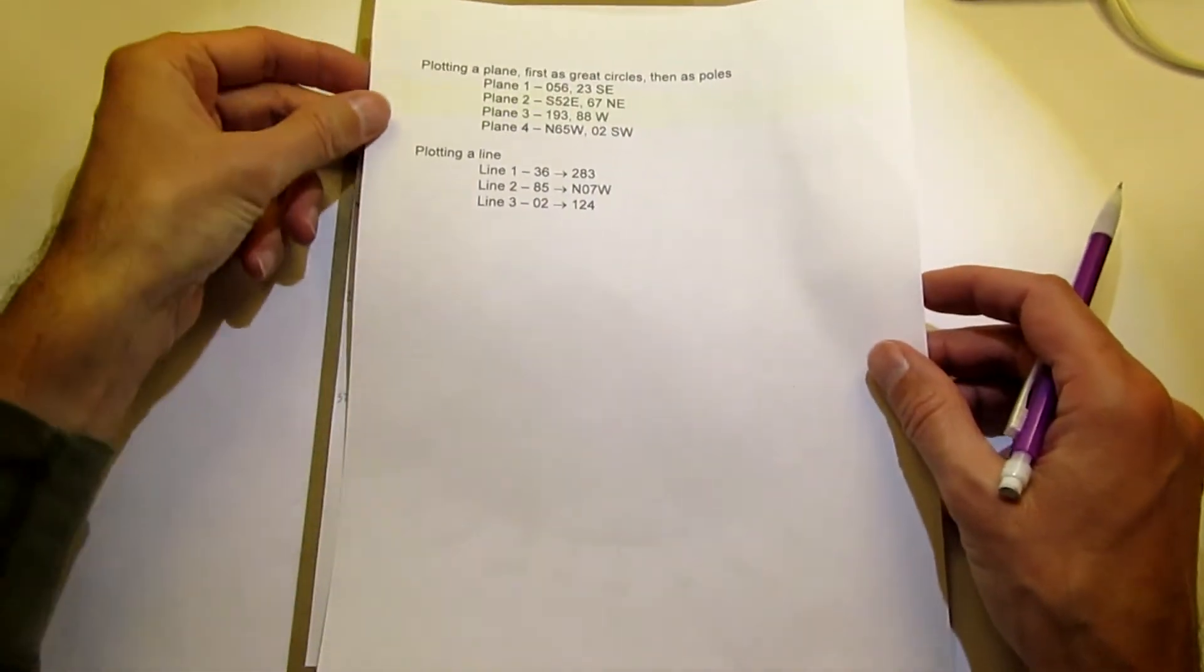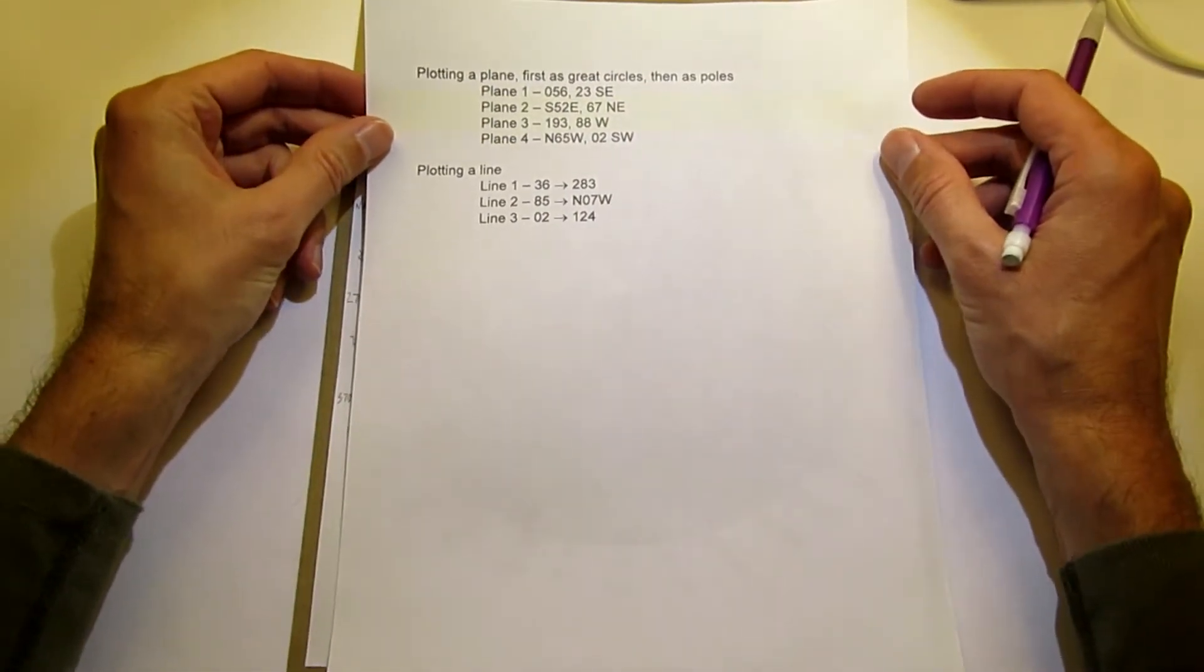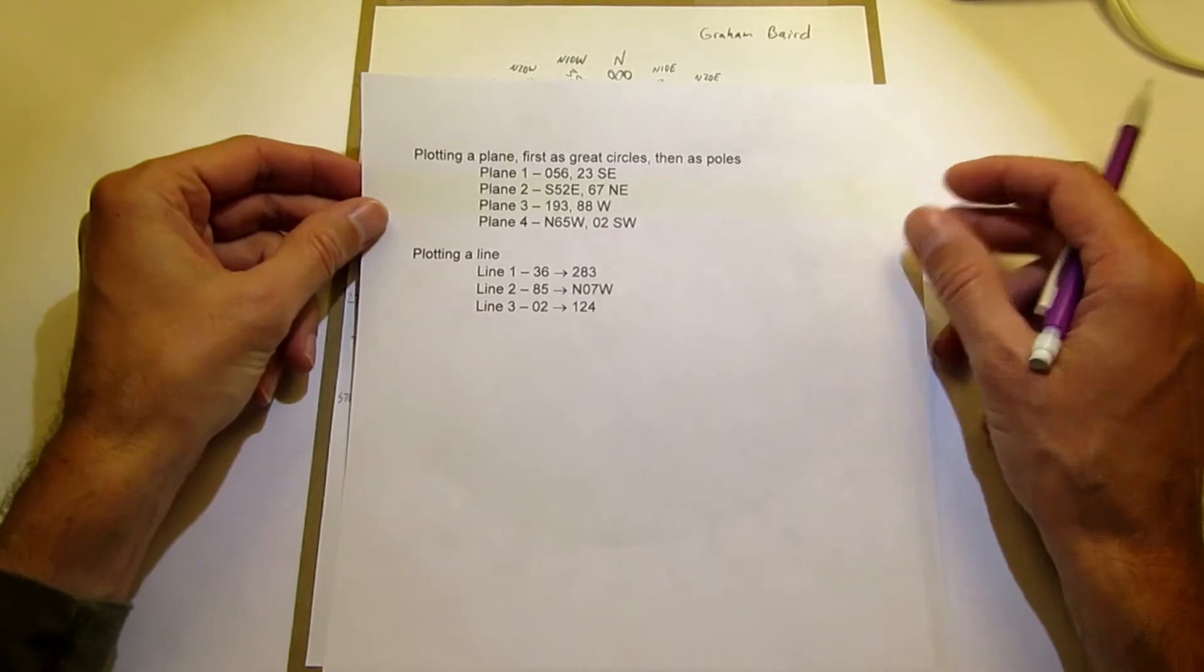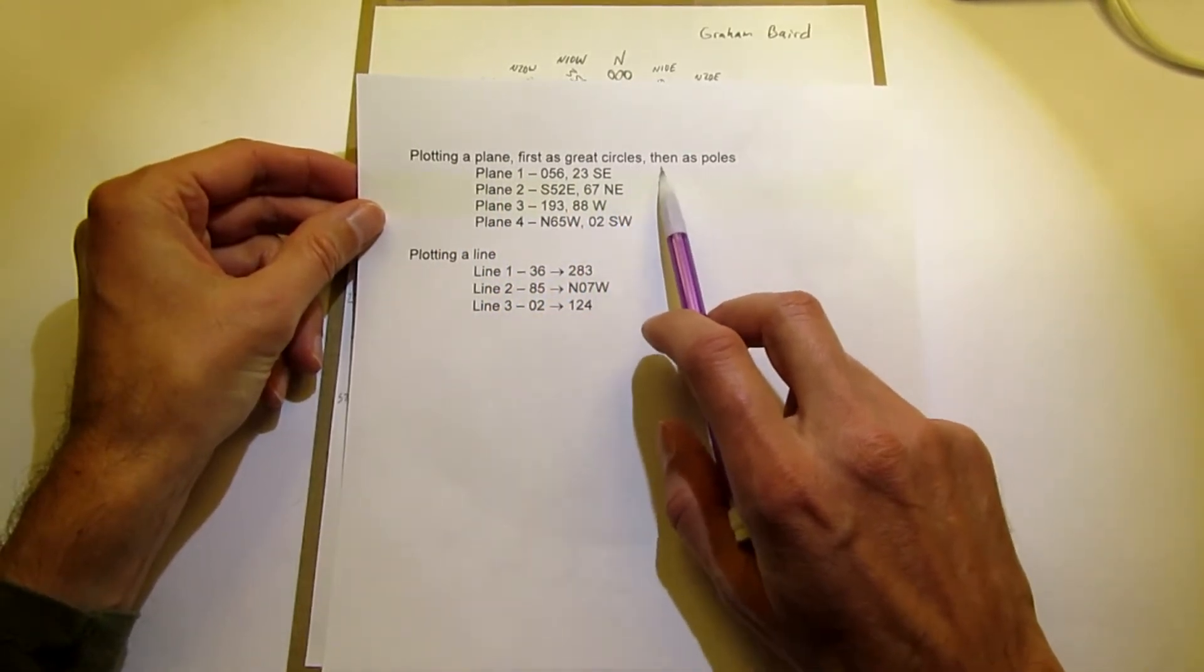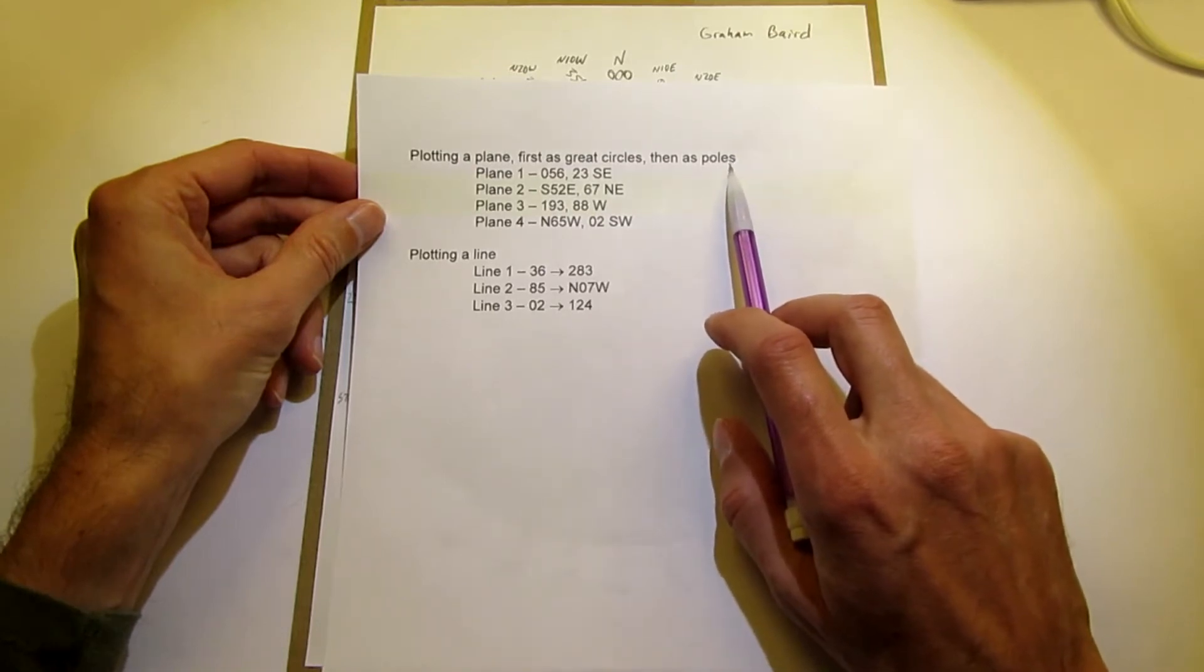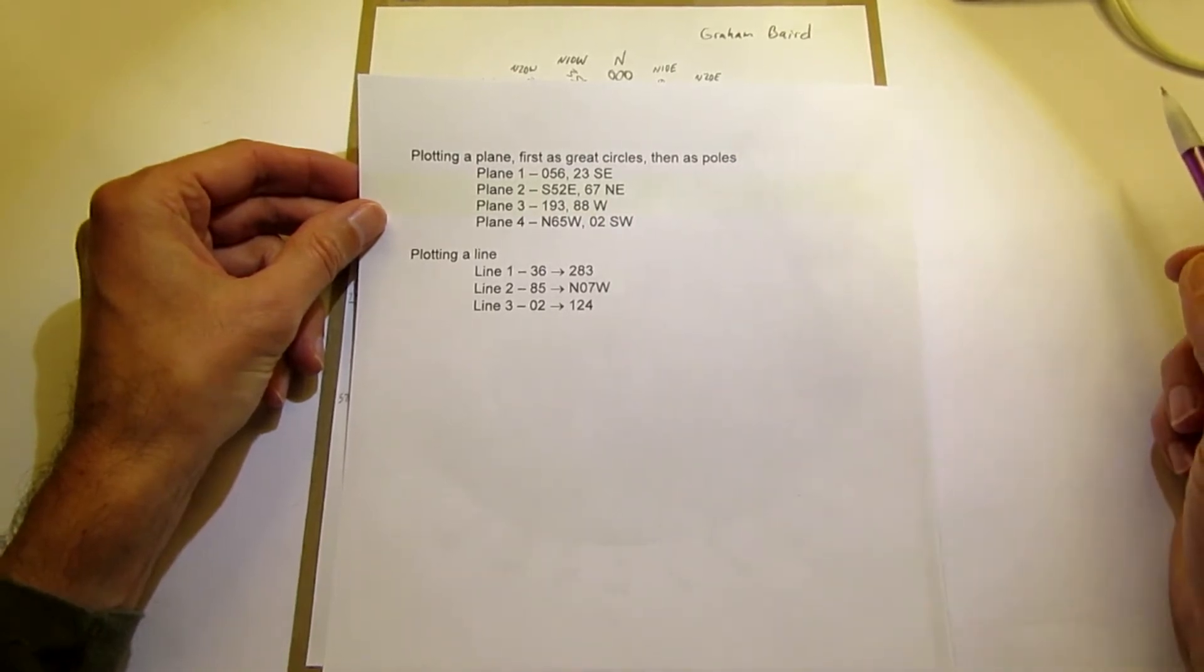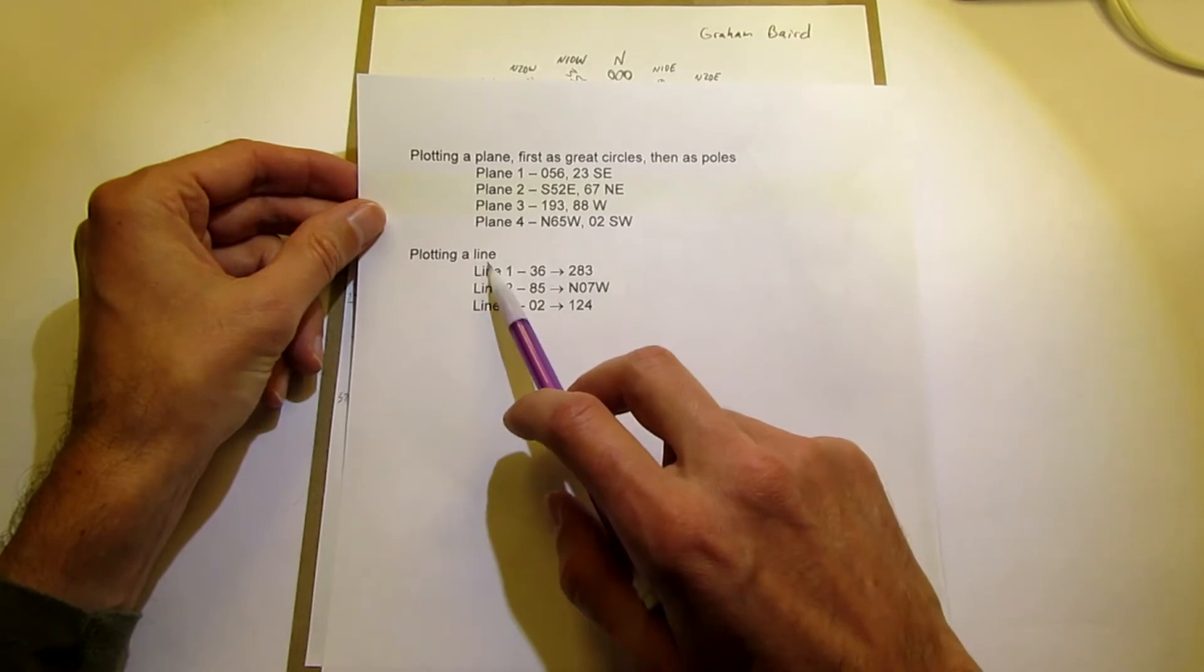Okay, so here's the goal. We're going to make three different stereonets. The first is we're going to plot planes as great circles. Then we're going to plot those planes as poles or the perpendicular to those planes. And then we'll plot lines.